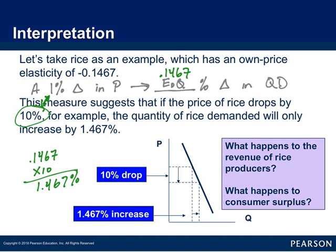As a reminder, rice is an inelastic product. So what happens to the revenue of producers on an inelastic product? When the price goes down, revenue goes down. On an inelastic product, when price goes down, revenue goes down. And if we asked what happened to consumer surplus — when price goes down, consumer surplus always increases.